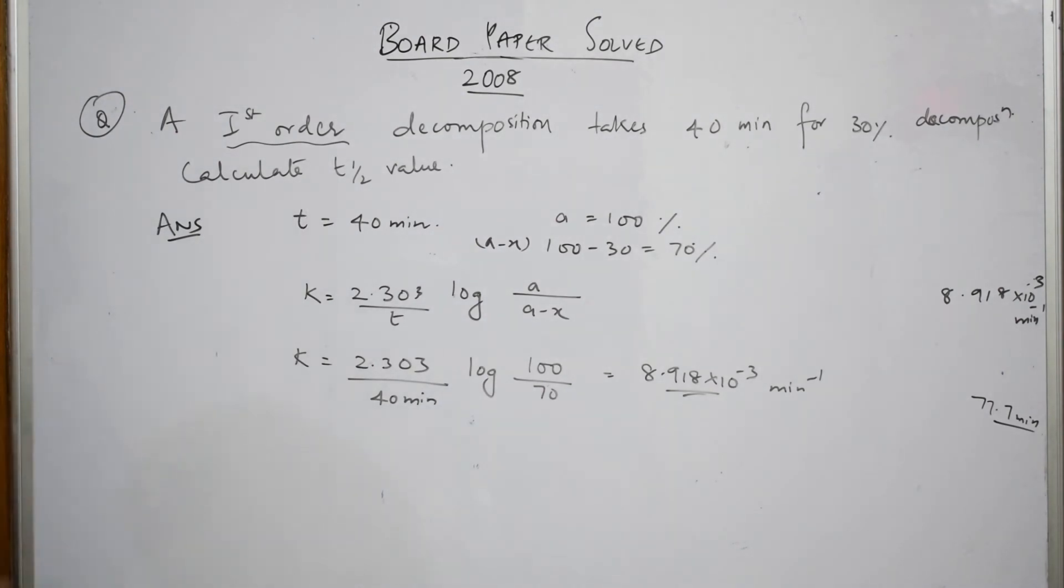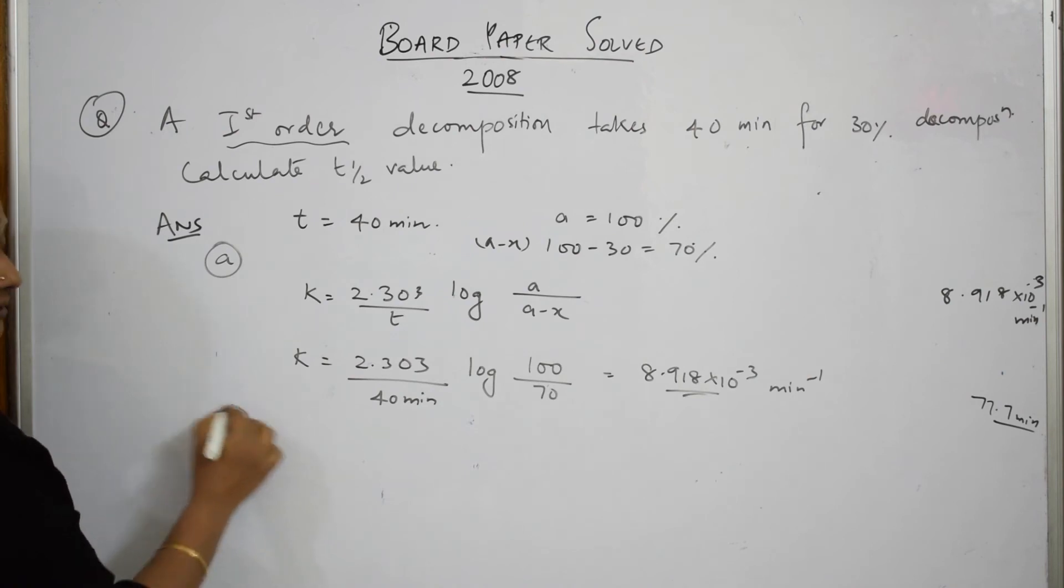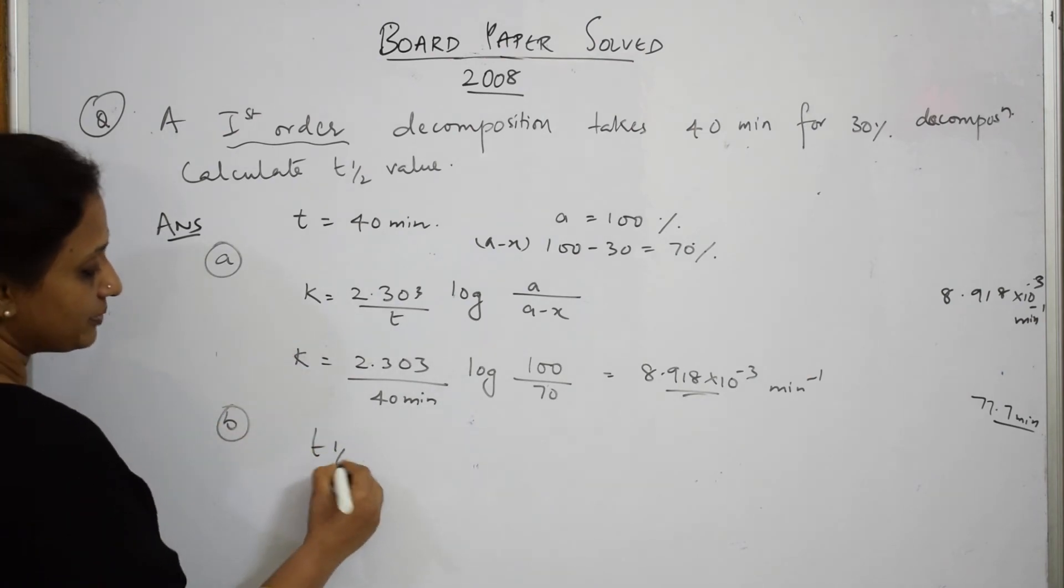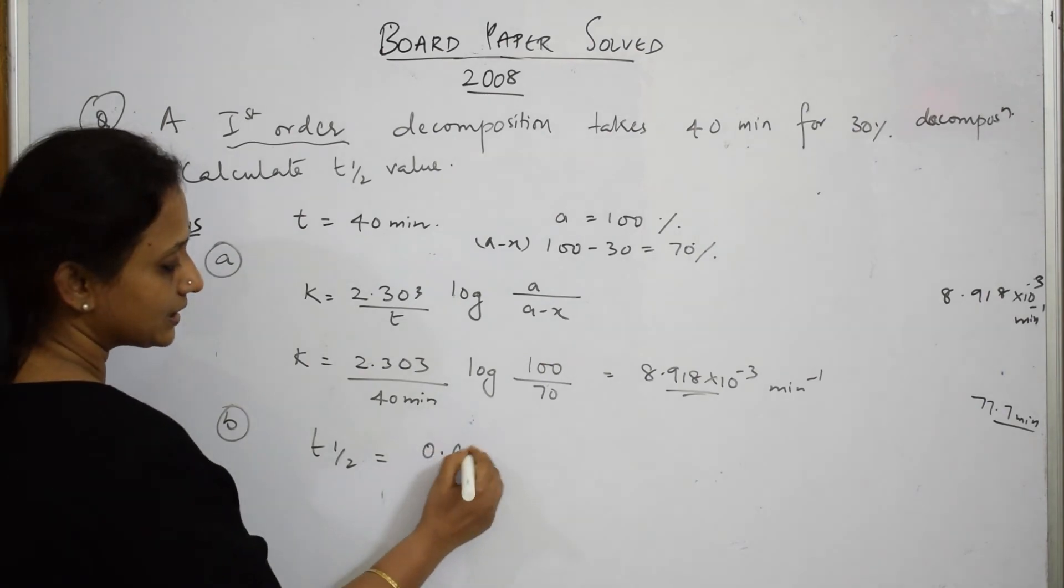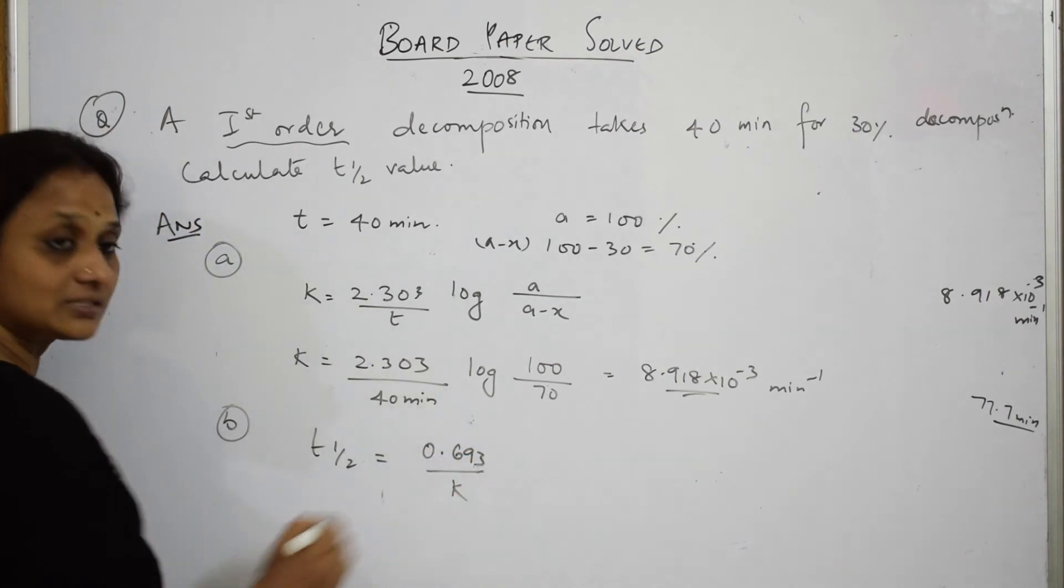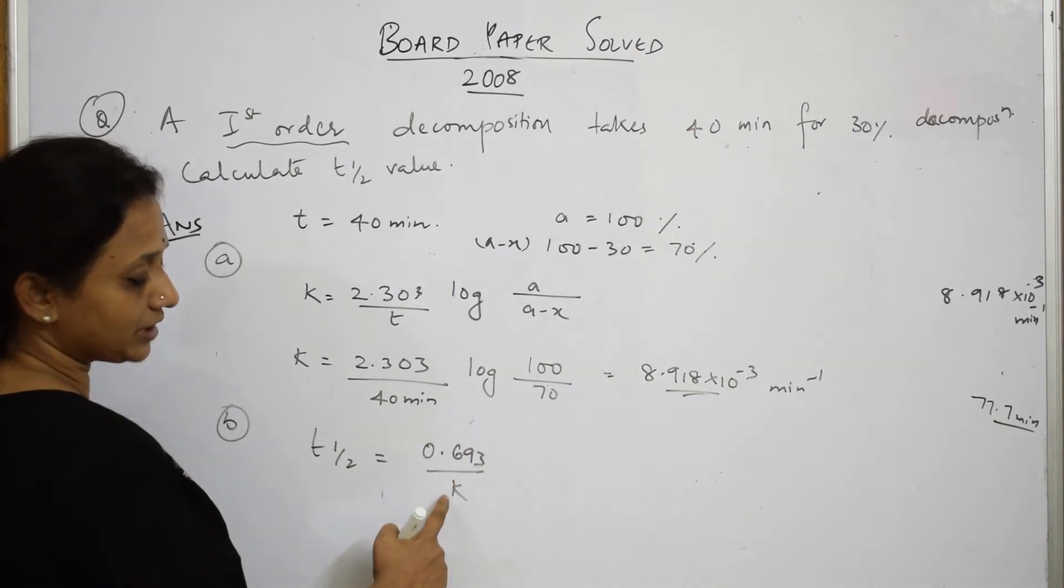I'm still not done with the numerical. They asked me to calculate t half. We very well know half-life period in the first order rate equation is equal to 0.693 by k. We have already derived this. Please watch the video for that. Now substitute this value of k here.